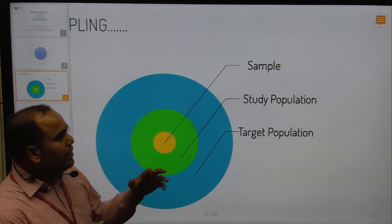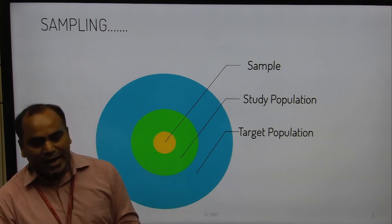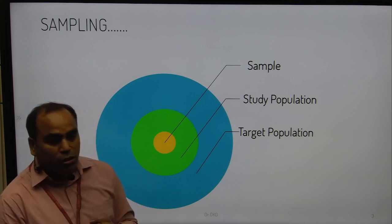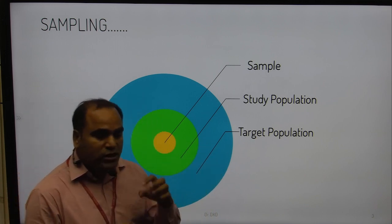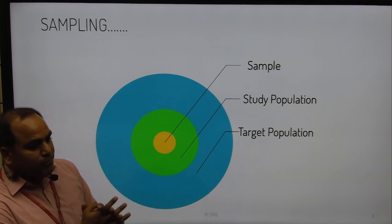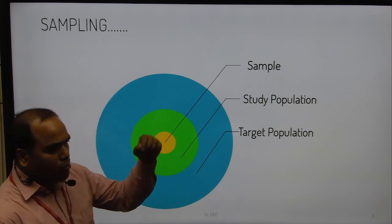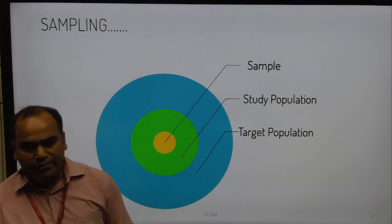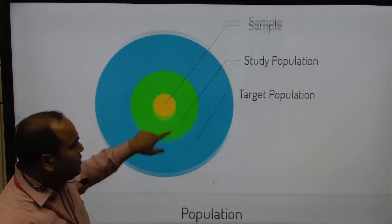Once you decide your study population out of the target population, you can think about the sample. We consider prior studies like pilot studies or published research articles to find references, and with the help of those references we can decide how much sample size is required for the particular study. We can calculate this using different statistical methods.